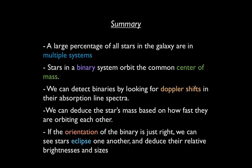We also learned that a large percentage of all stars in the galaxy are in multiple systems. Stars in a binary system will orbit the common center of mass. We can detect binaries even if we can't visually resolve the two components by looking for Doppler shifts in their absorption line spectra. We can deduce each star's mass based on how fast they are orbiting each other. And if the orientation of the binary is just right, we can actually see stars eclipse one another, and thereby deduce their relative brightnesses and sizes.